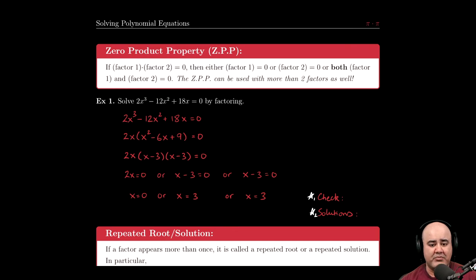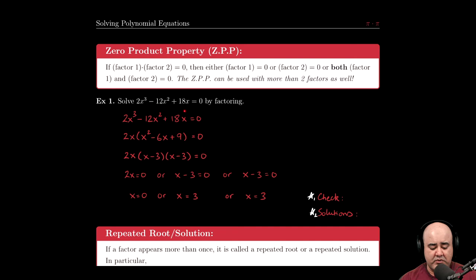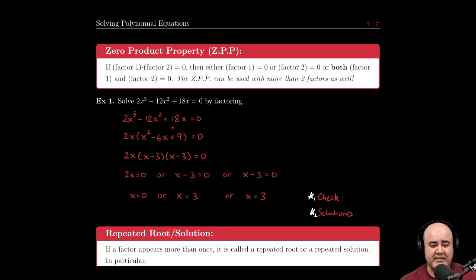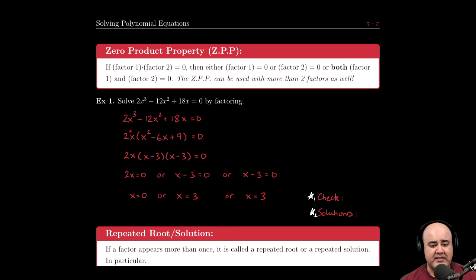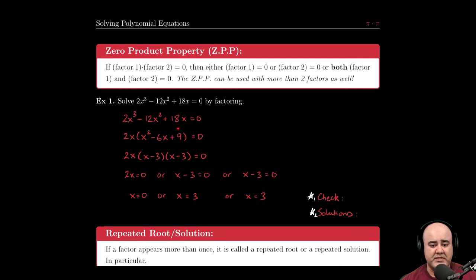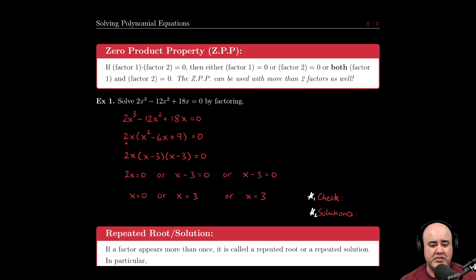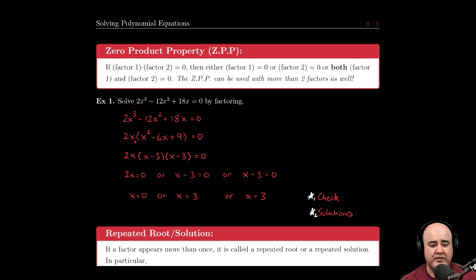Having one side being zero is important and necessary because that's the only way we can invoke the zero product property. How do we solve this equation? We solve it by factoring. We look at 2x³ - 12x² + 18x. First we think, is there a GCF? There's a GCF of 2 - all these coefficients are even so I can factor a 2 out. Then I have x³, x², and a single x, so I can factor out an x as well. To know what goes inside, we divide each term by the GCF: 2x³ divided by 2x gives x², -12x² divided by 2x gives -6x, and 18x divided by 2x gives 9.